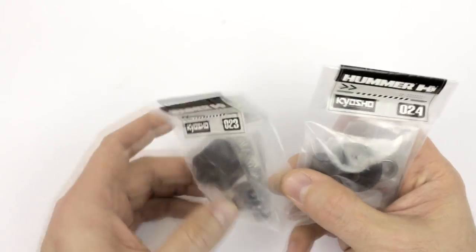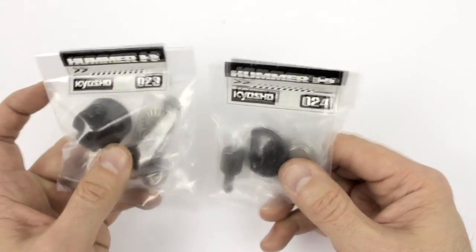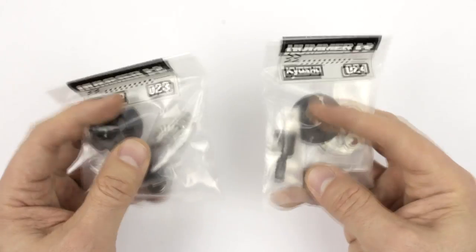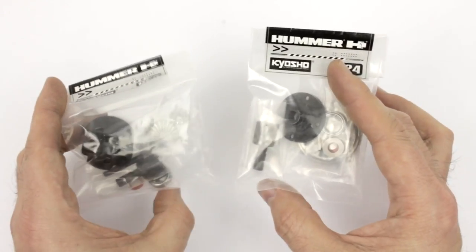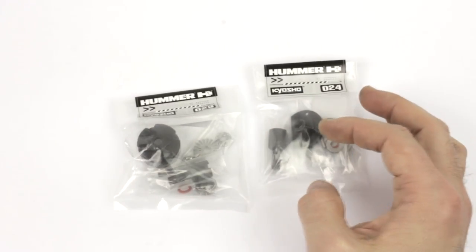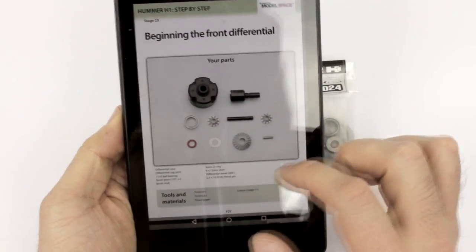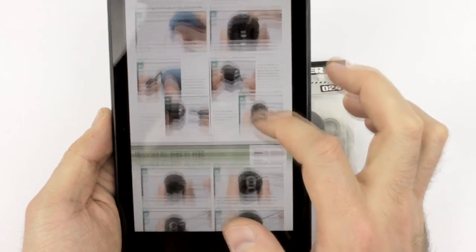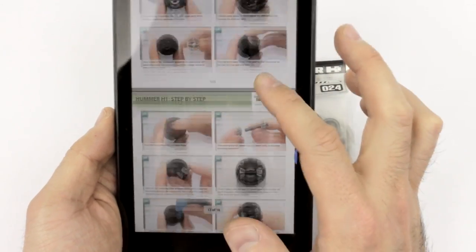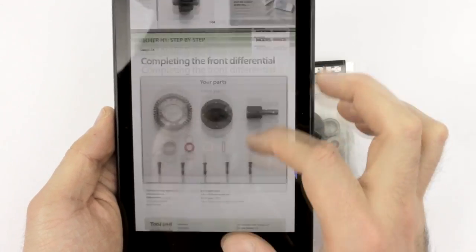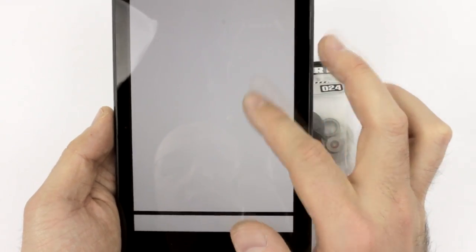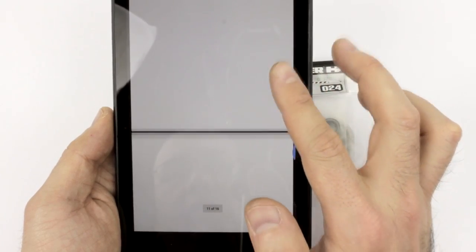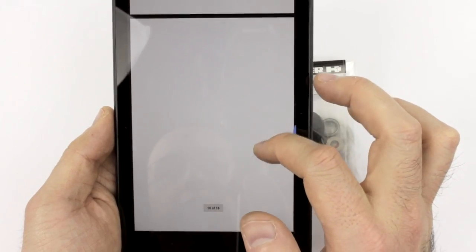So we've got steps 23 and 24 here. Now as I mentioned in the last step, we are starting with the front differential. These are the parts for the front end of the car. And just looking again at our digital instruction guide, you can see that it's basically exactly the same as what we did previously with the rear differential. So there will be a lot of familiar steps here.